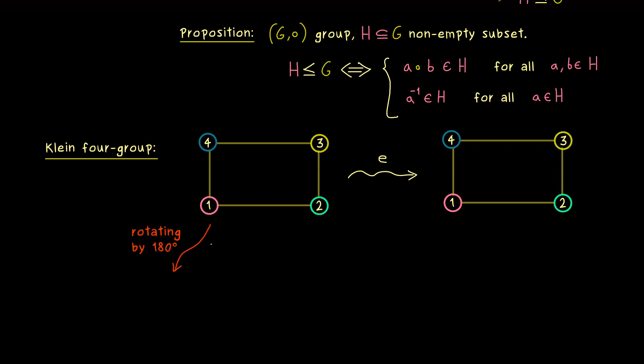So you see, we get the same rectangle out, but the enumeration of the vertices changed. Obviously, this is exactly what we mean by a symmetry operation.